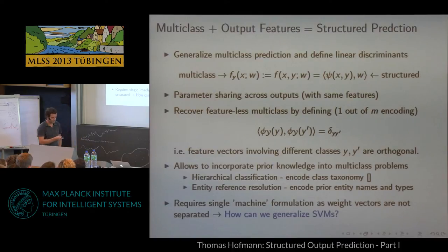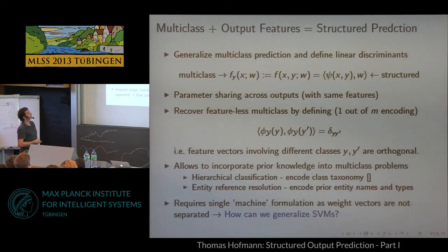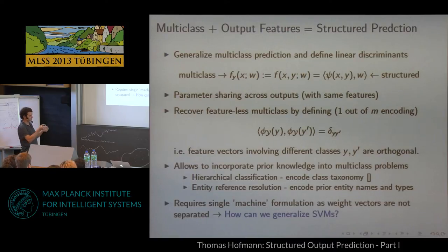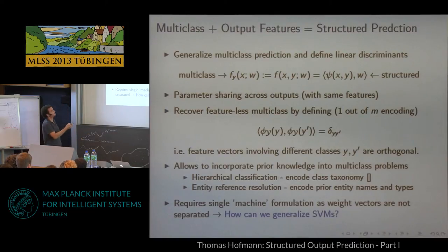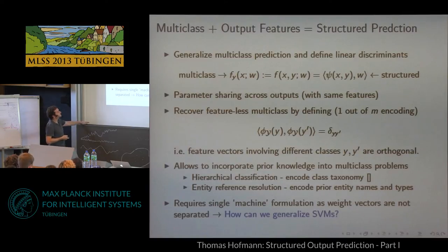We can relate this back to the multiclass setting. The difference is that now we have a shared parameter vector w, whereas before we had a separate weight vector per class. We can recover the multiclass setting — with no generalization across outputs — if we define the output representation to be completely orthogonal for different outputs, i.e., a one-out-of-m encoding. Then inner products between different outputs are zero and there is no sharing whatsoever.